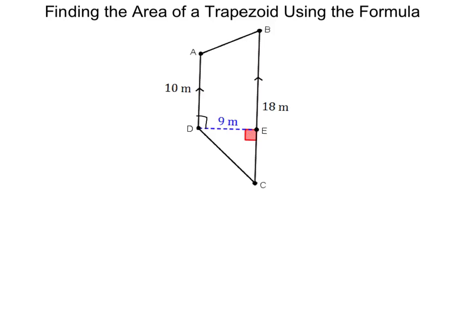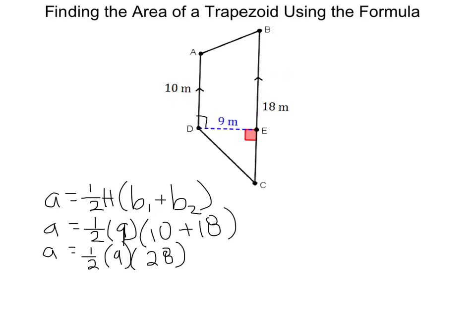So we're going to use our formula. Please make sure that the formula is in your notes because it's really important. So our formula is going to be one-half of the height, which is nine meters, times ten plus eighteen, the sum of the bases. You need to make sure that you are following the order of operations when you are simplifying your area. So we start by simplifying the ten plus eighteen.